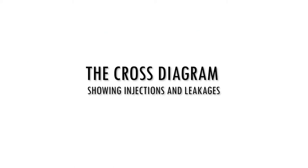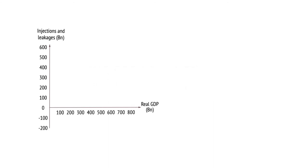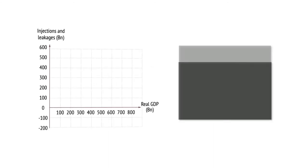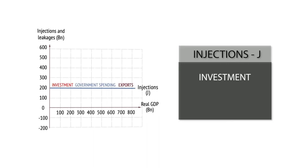National Income Equilibrium: The Cross Diagram. Injections into the flow of income in an economy include investments by firms, government spending on public and merit goods, and demand for an economy's exports. Because injections are not determined by current GDP, the injections line is horizontal.